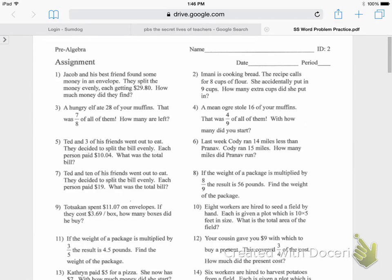Alright. Jacob and his best friend found some money in an envelope. They split the money evenly, each getting $29.80. How much money did they find? So just looking at this, it looks like there's only one number in it. You can see there's $29.80. There's one number. There's got to be another number in there somewhere. Let's read it again.